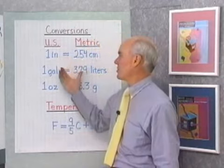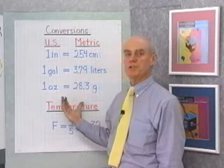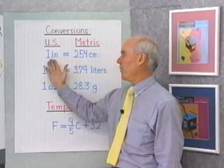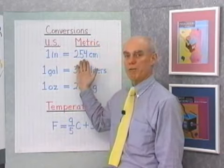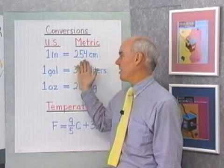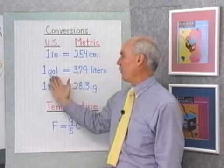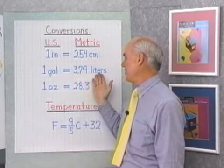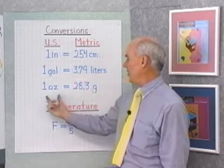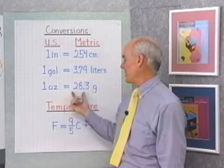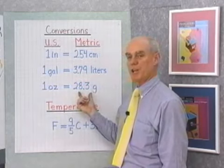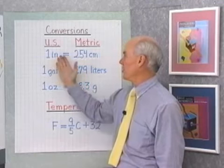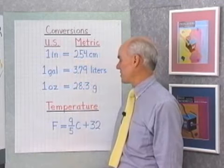The more common conversions between the two systems are: for length, 1 inch is the same as 2.54 centimeters; for volume, 1 gallon is the same as 3.79 liters; and for weight, 1 ounce is the same as 28.3 grams. So here are just 3 conversions between the U.S. and the metric system.